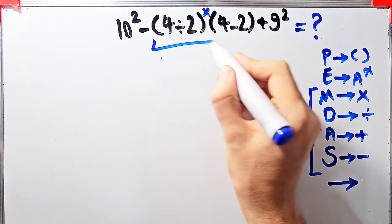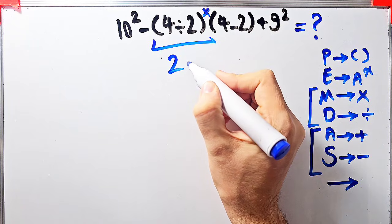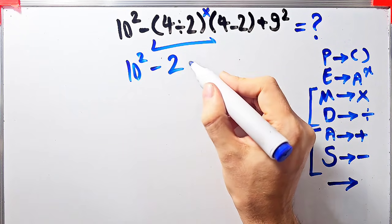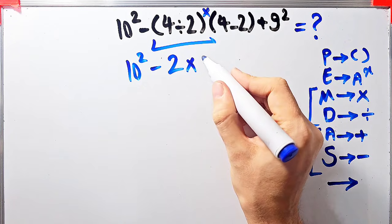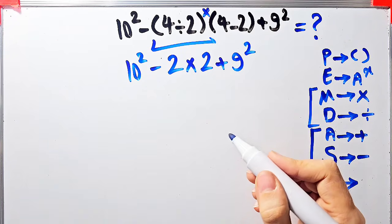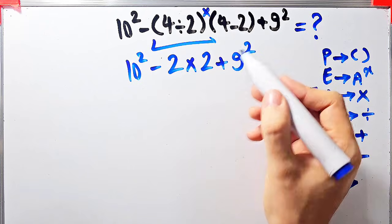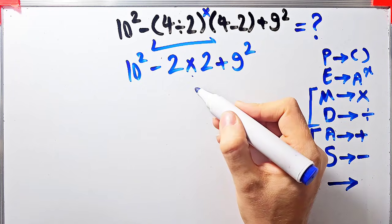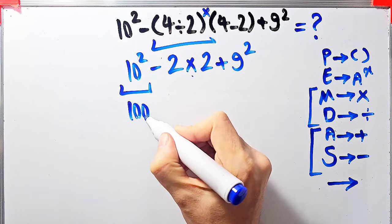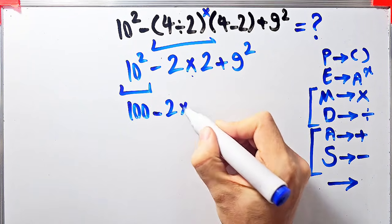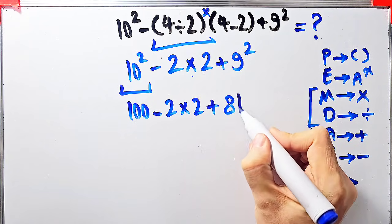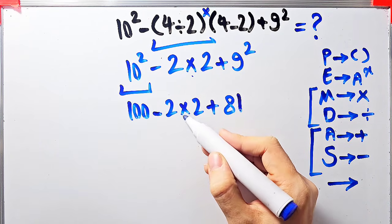According to the PEMDAS rule, first we simplify the parentheses: four divided by two equals two. Now we have ten to the power of two, minus two, times open parentheses four minus two close parentheses, plus nine to the power of two. We simplify the remaining parentheses: four minus two equals two. Now we simplify the exponents: ten to the power of two equals one hundred, and nine to the power of two equals eighty-one.